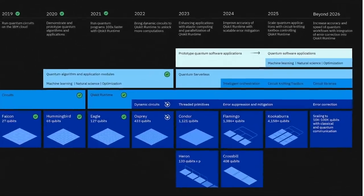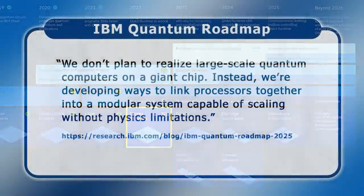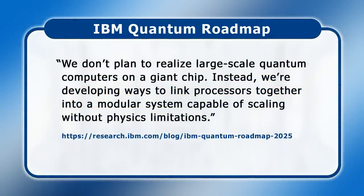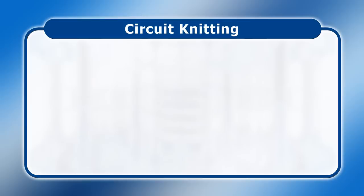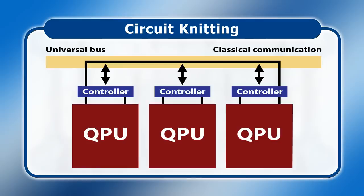In the second half of 2022, IBM plans to release a new 433-qubit processor called Osprey. But as it has now revealed, in subsequent years the intention is to scale up the number of qubits in a system by moving beyond the limits of a single chip processor. As IBM explains: we don't plan to realize large-scale quantum computers on a giant chip. Instead, we're developing ways to link processors together into a modular system capable of scaling without physics limitations. IBM is working on three different scaling techniques, the first of which is called circuit knitting. This will allow quantum computational routines known as quantum circuits to be broken into smaller pieces that can be run on different quantum processors, with the results knitted back together using a classical computer.